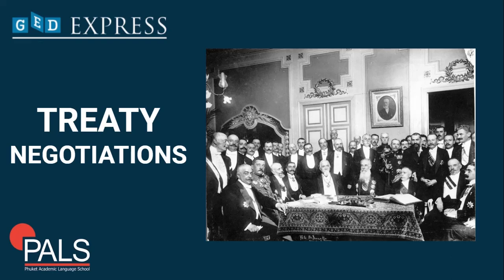As discussed in my previous video about Wilson's 14 Points, President Woodrow Wilson felt that the best solution was to incorporate his 14 Points. He thought that Germany should not be blamed for the war or punished too harshly. However, French Prime Minister Clemenceau felt that Germany was responsible for the war, should take the blame, and be forced to pay large reparations.